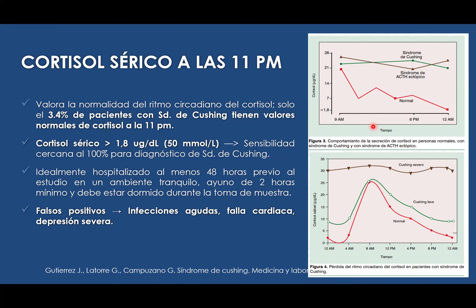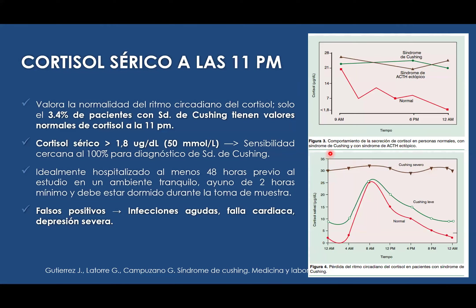En casos de pacientes con Cushing, lo que vemos es que el cortisol se sigue liberando de manera progresiva y sostenida. No sigue una disminución y luego un pico. Entonces, el paciente siempre va a tener el cortisol elevado. Por lo tanto, podemos valernos de esto para hacer la medición del cortisol sérico y del cortisol salival.